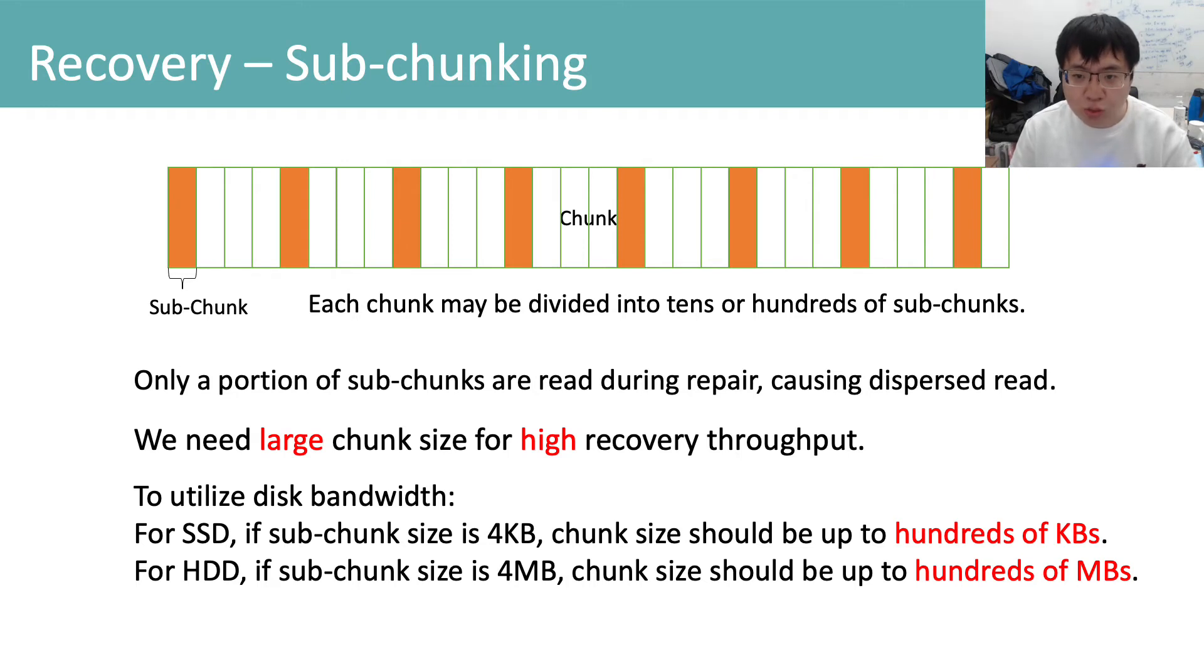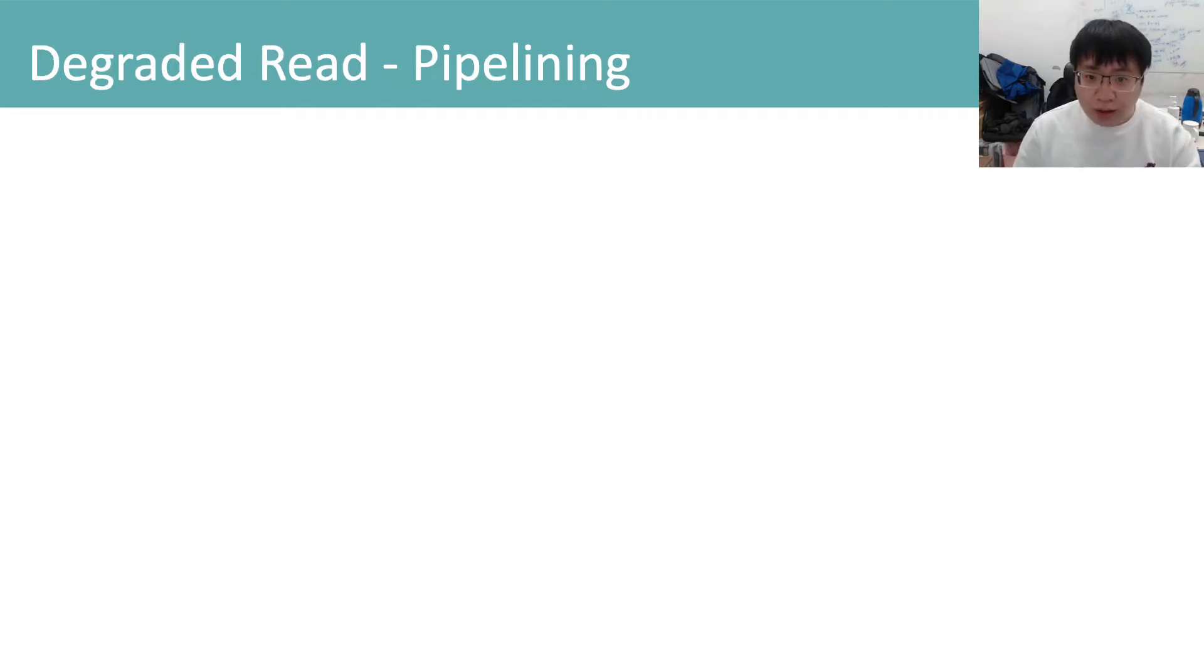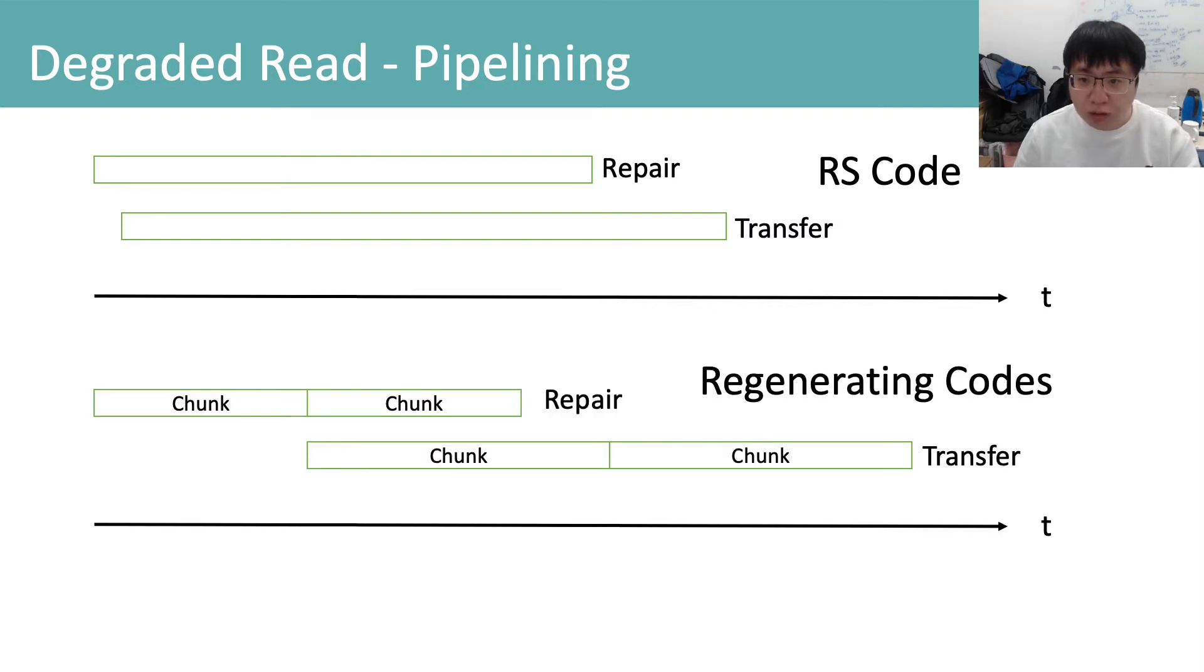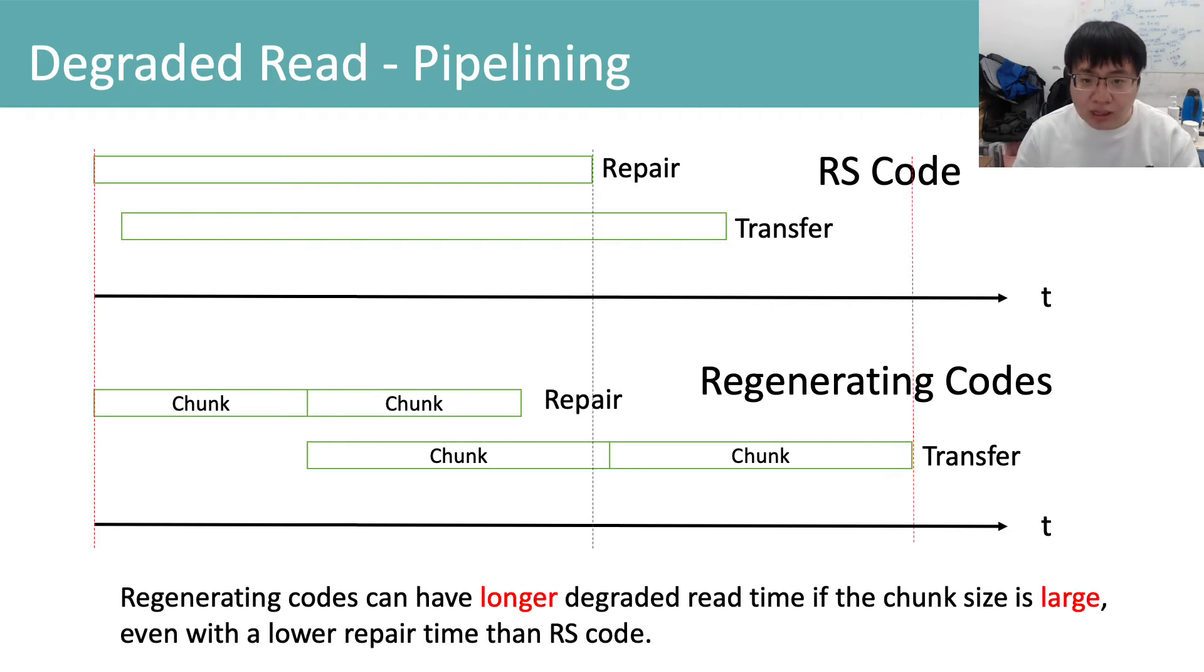The chunk to repair granularity also leads to increased degraded read time. If we repair at the granularity of bytes like RS code, we can pipeline repairing and transferring repaired bytes to the client. However, for regenerating codes, we need to wait for the repair of the first chunk before transferring it back to the client. As a result, regenerating codes can have longer degraded read time if chunk size is large, even with a lower repair time than RS code.